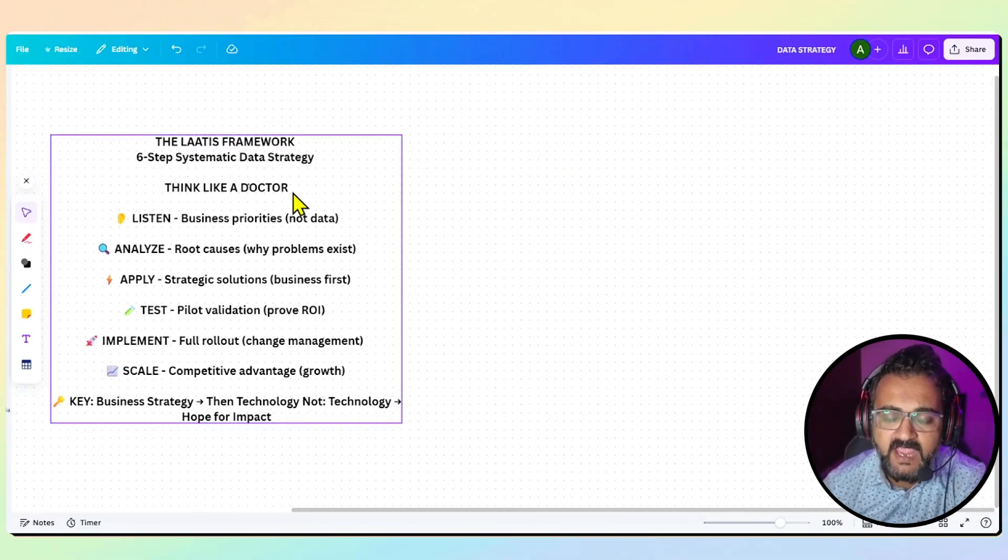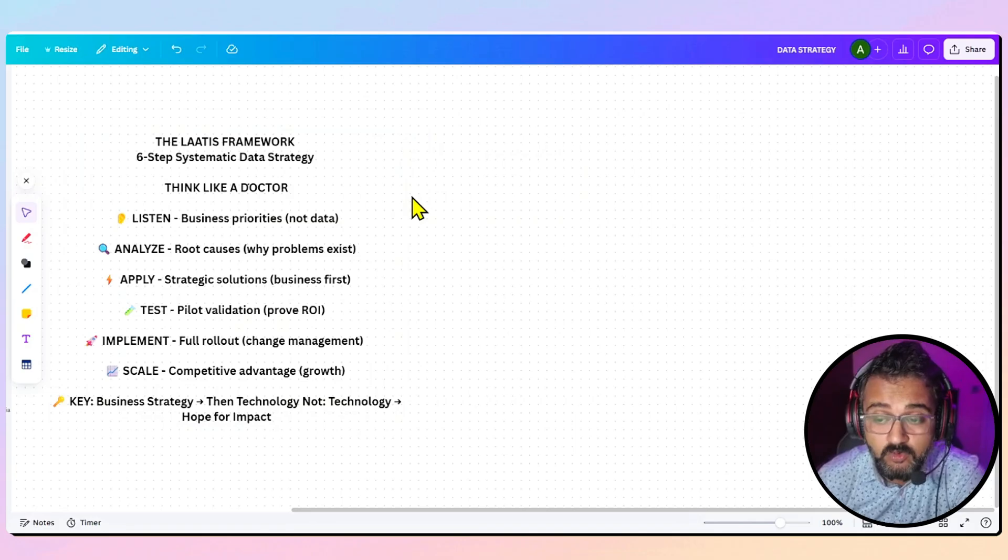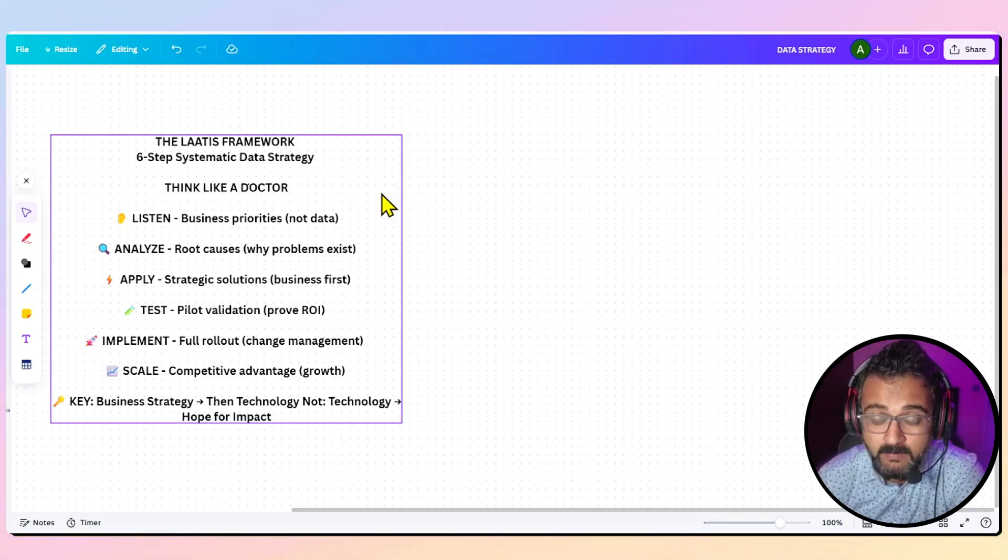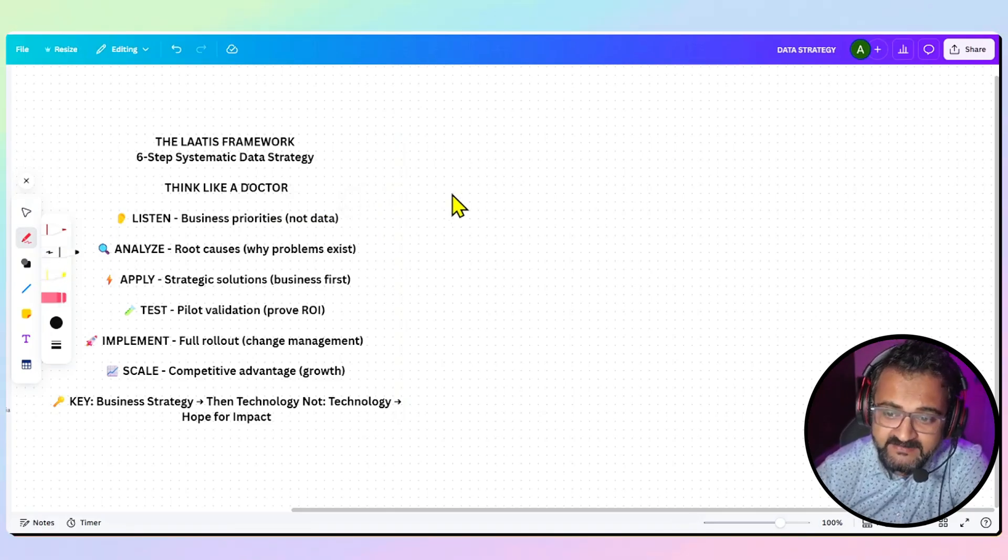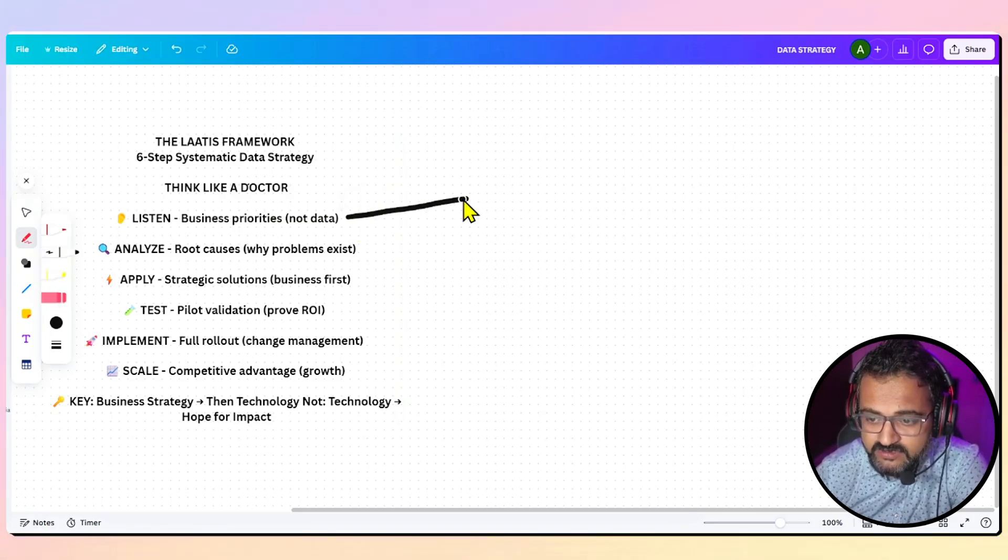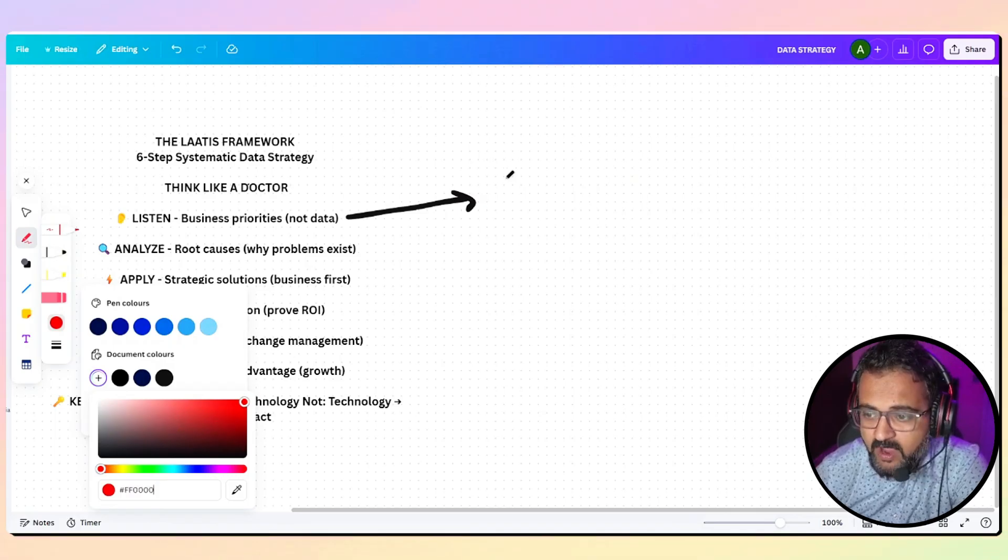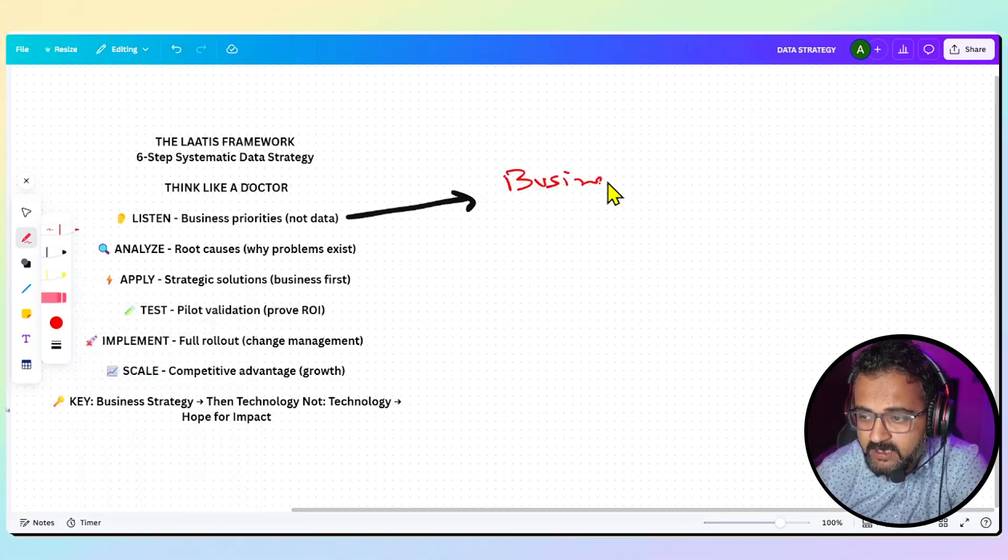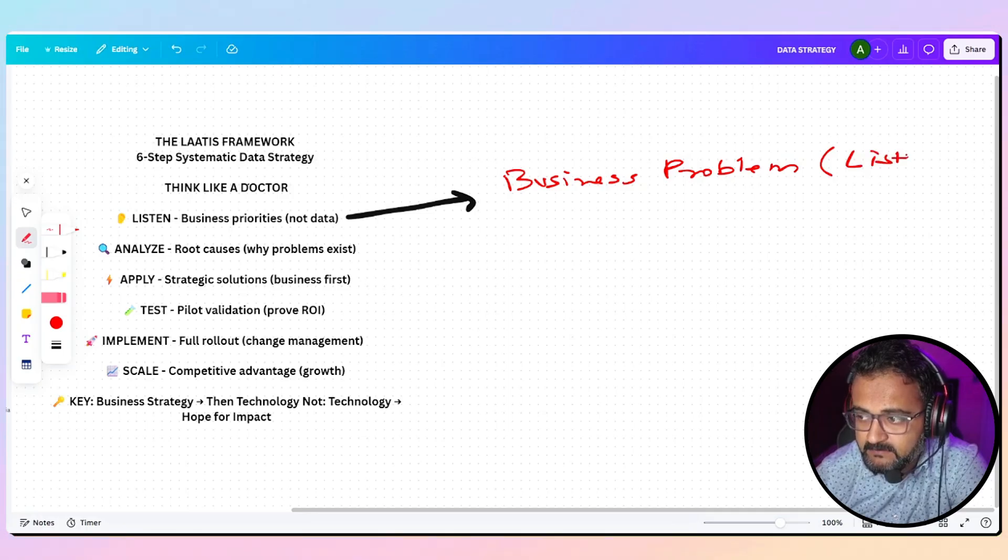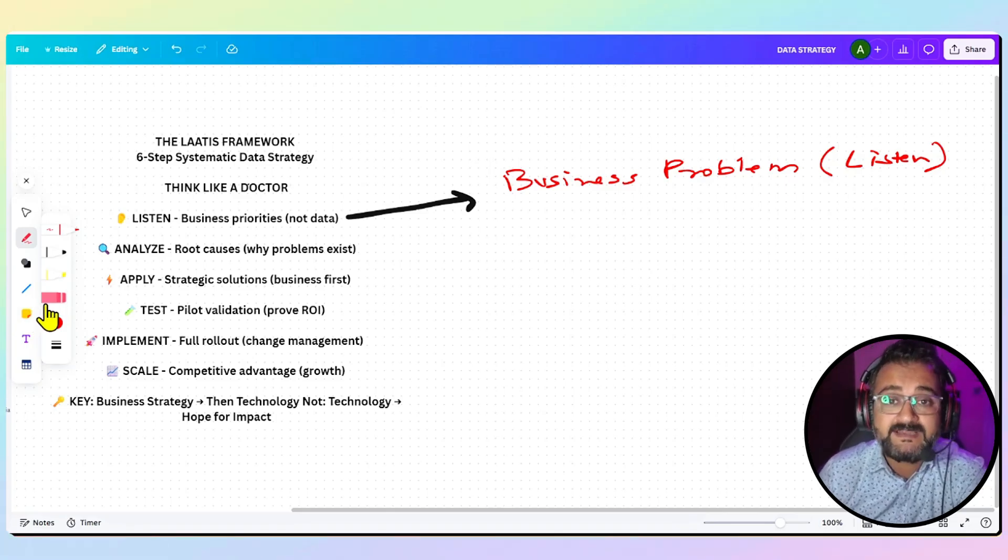This is the LAATIS framework. We have to think like a doctor. Whenever you go to a doctor, he just doesn't pull you into an operation theater and ask you to lie down so he can open your stomach and get you fixed. First of all, in any data strategy, the most important point is listening. It is the most important point, because you have to understand what business problem you are dealing with.